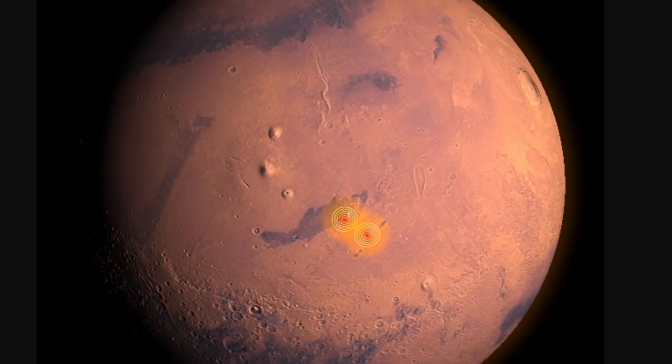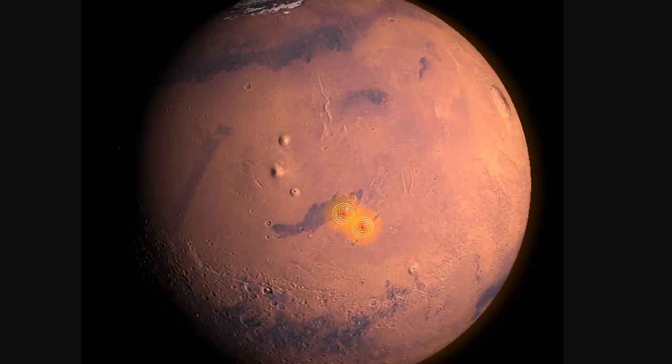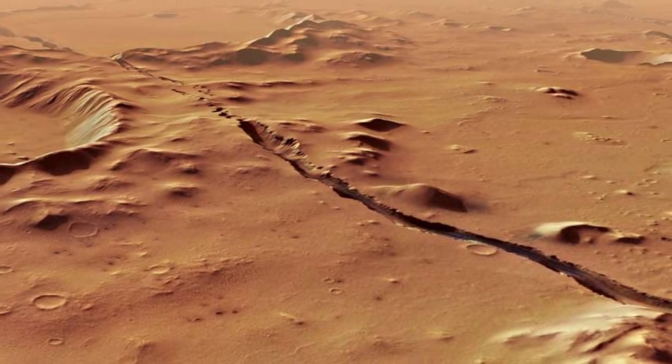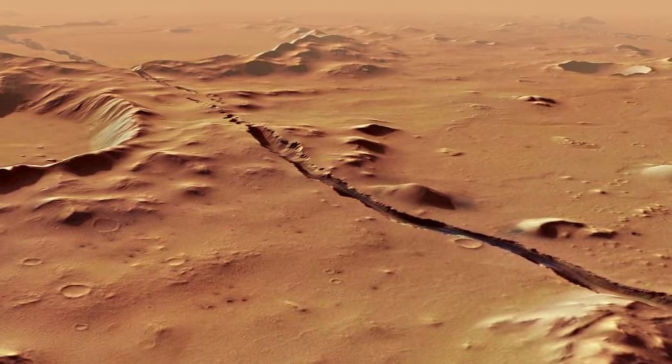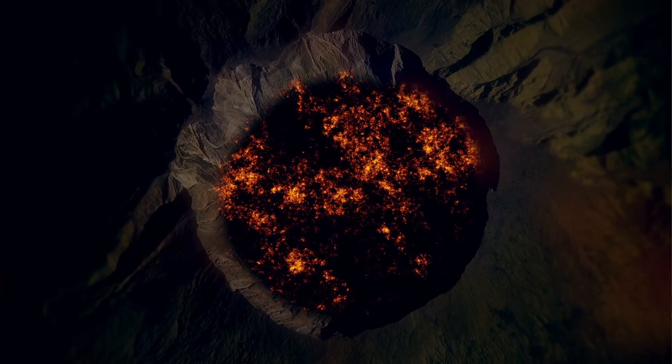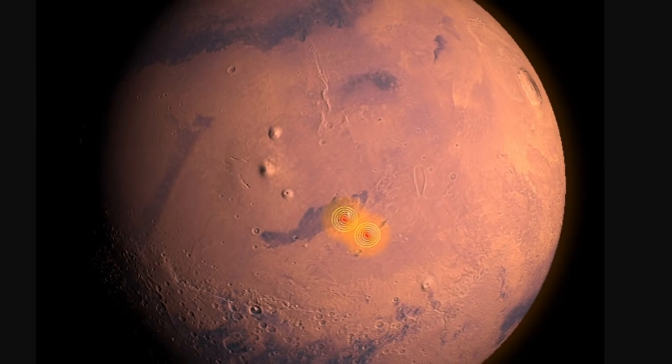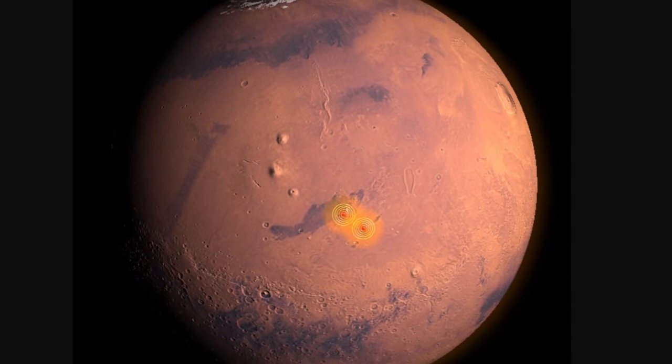But then relatively recently the scientists investigating a region called Cerberus Fossa, which very likely looks something like this, confirmed that a few earthquakes in this region, based on their low frequency and the amount of repetitions, were definitively volcanic in nature. They could not have been produced in any other way. And so the scientists behind this paper even speculated that maybe Martian volcanoes could still erupt in the future.